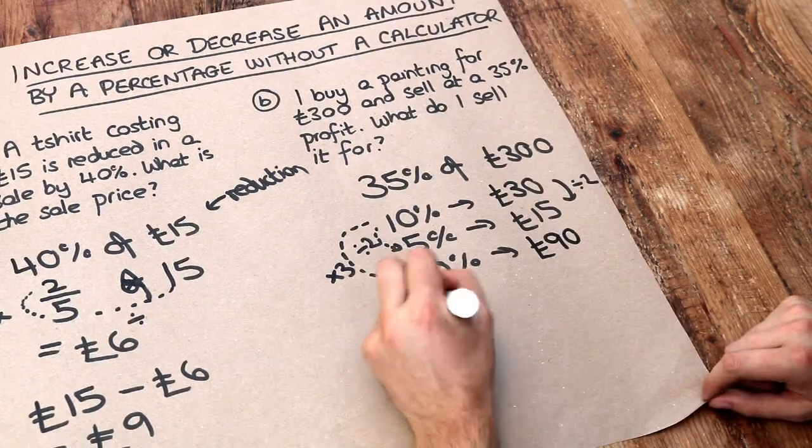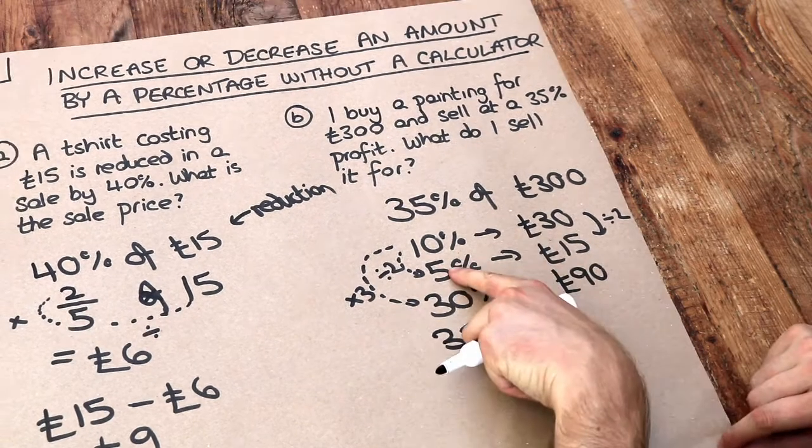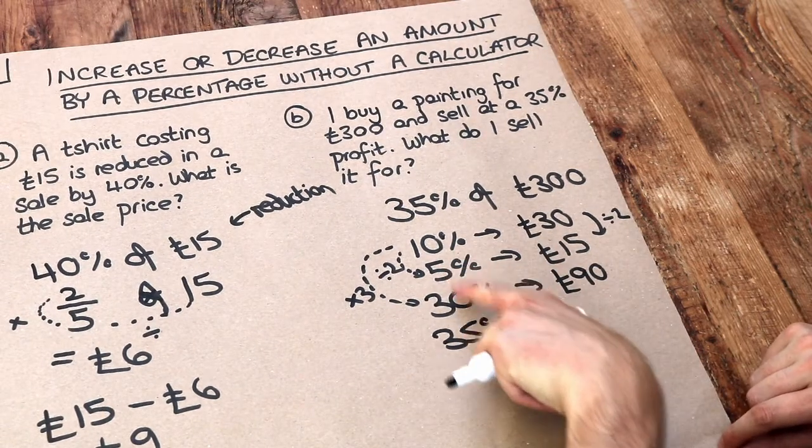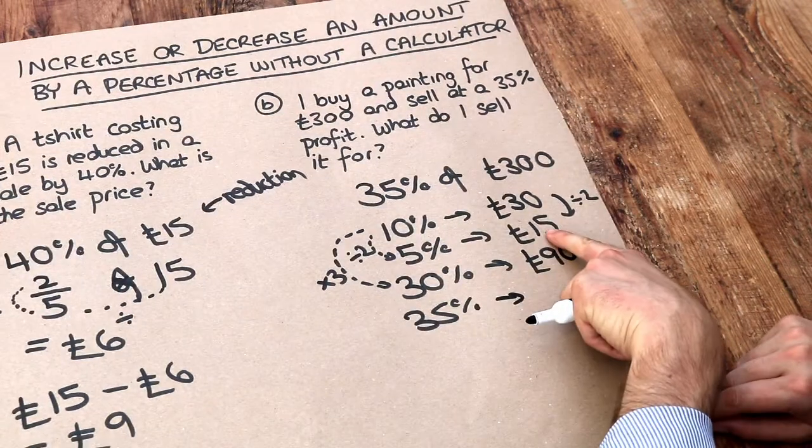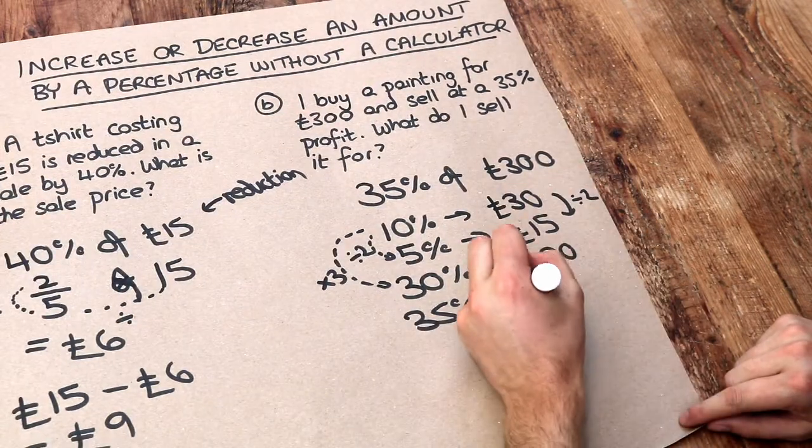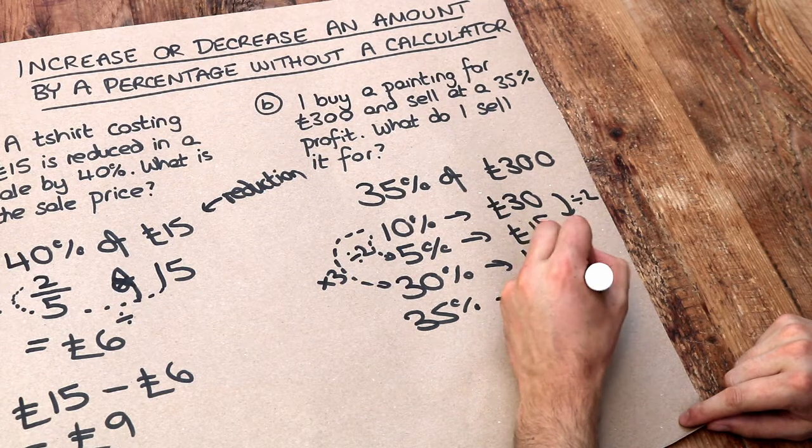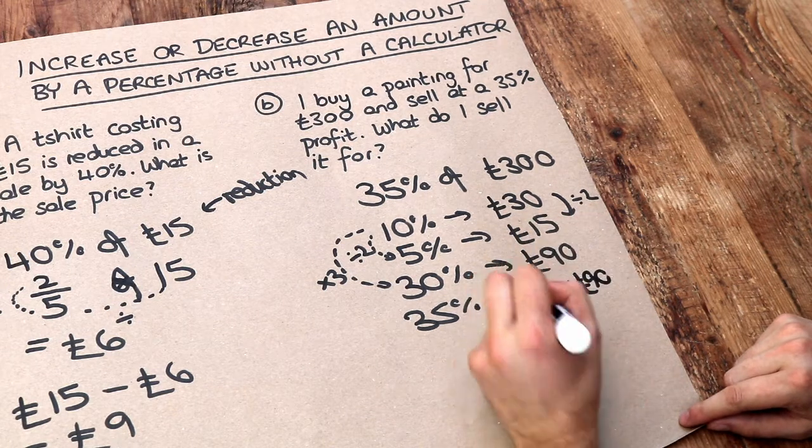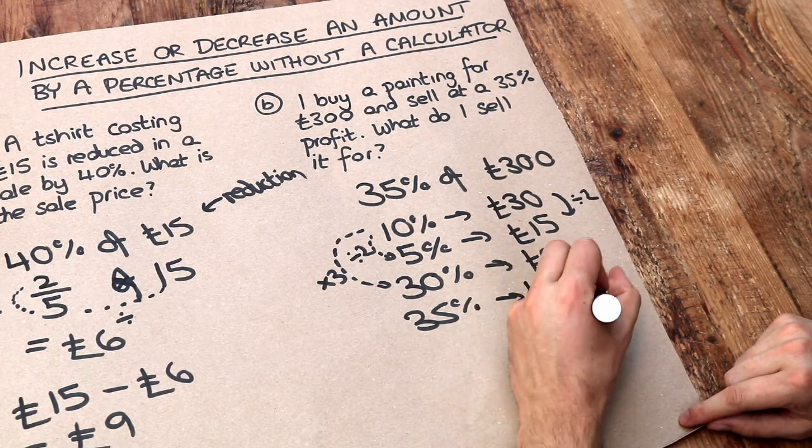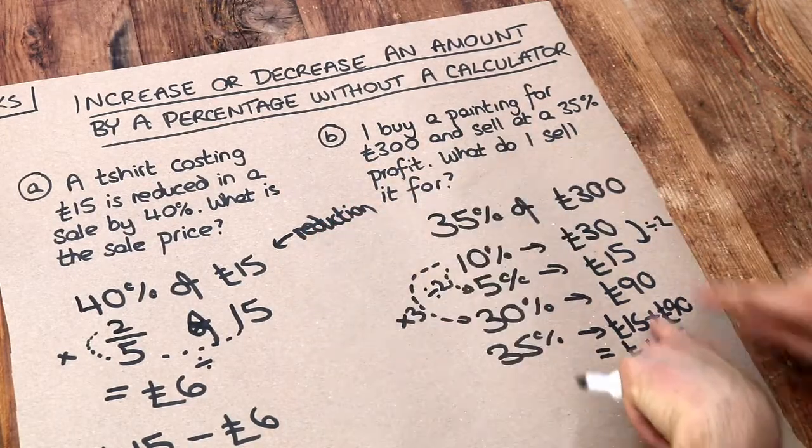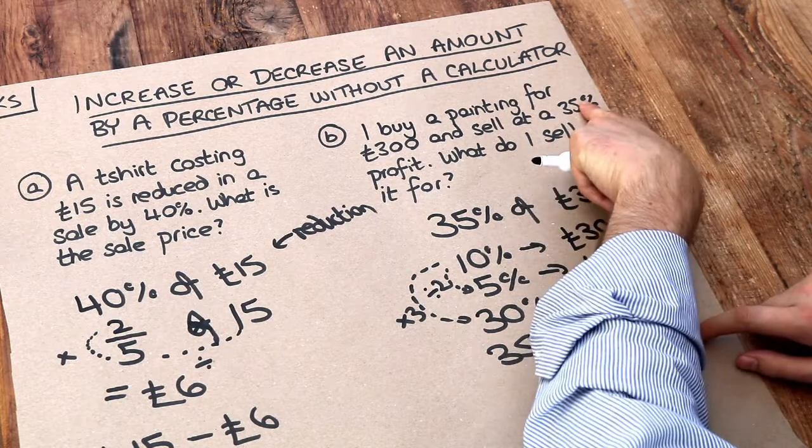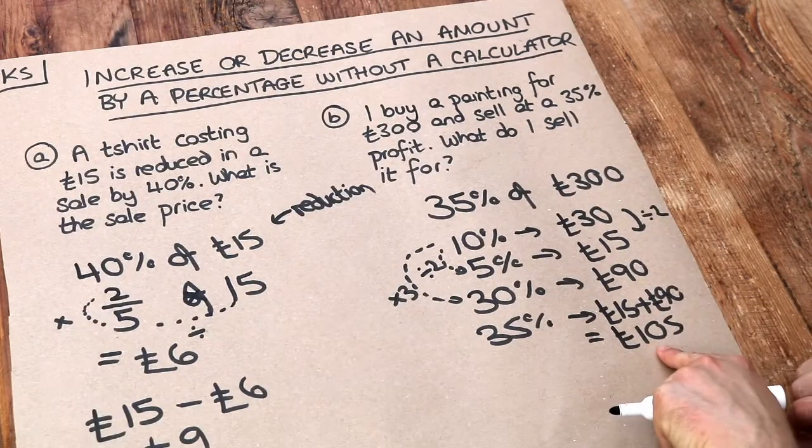And we need to know what 35% is. Well we know 5% and we know 30%. If we add those together we would get 35%. So we just need to add those two values, 15 plus 90, and that gives us £105. So you buy a painting for £300 and then sell it at £105 profit. 35% profit is £105 profit.